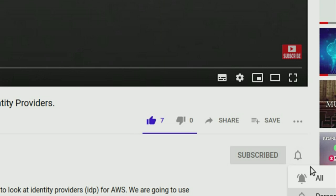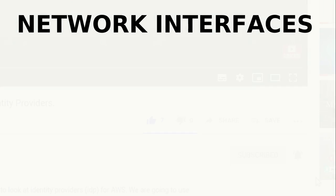In this session we are going to talk about network interfaces. Whenever you launch your EC2 instances, they will be launched within a network. We are going with the default VPC. Network interfaces contain network information like the public IP address, private IP address, subnet, security group, and all that information.